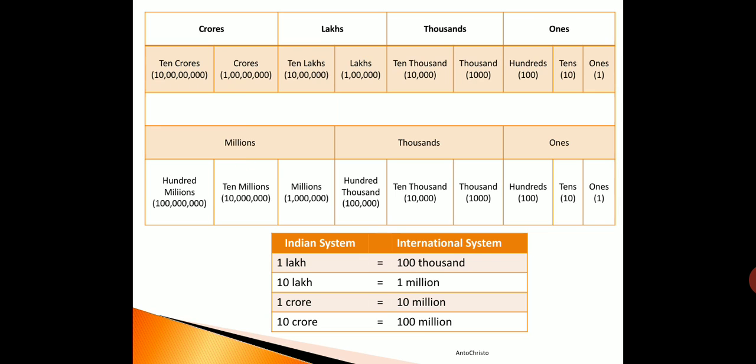Now the last comparison: ten crore is equal to 100 million. See where ten crore is — straight across it is given as 100 million. So this is how the basic comparison is done. Now we will go on to some problems to be solved.